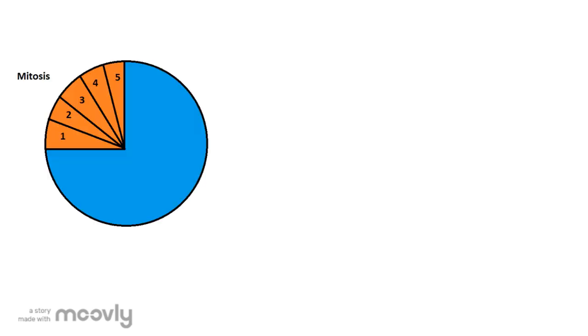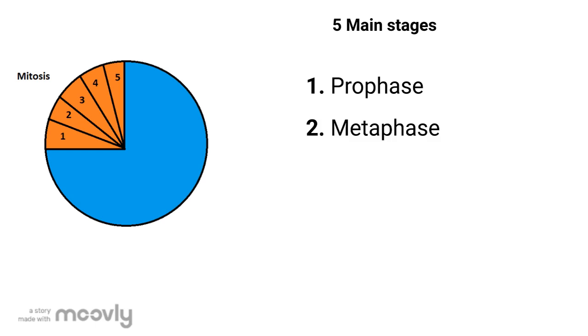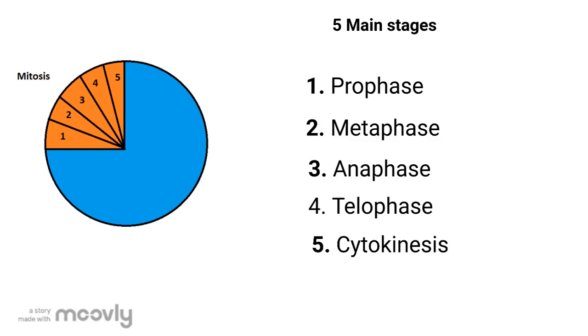Mitosis has five main stages: prophase, metaphase, anaphase, telophase, and finally cytokinesis.